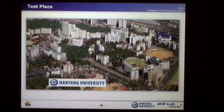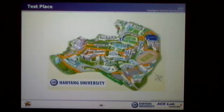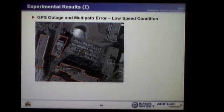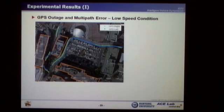This is Hanyang University, where I'm from. As you can see, the localization system was tested in this place. As you can see in this map, there are many buildings. Therefore, there are many places where the GPS signal is very poor. As you can see in this picture, the road is surrounded by several buildings, and you can observe GPS RTK and multipath errors.